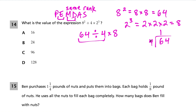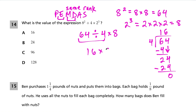Multiplication and division have the same rank, so we just go left to right: 64 divided by 4, then multiply by 8. 64 divided by 4 equals 16 — we can verify with long division. Then 16 times 8: 8 times 6 is 48, carry the 4; 8 times 1 is 8 plus 4 is 12. So we get 128. Choice D is our answer.